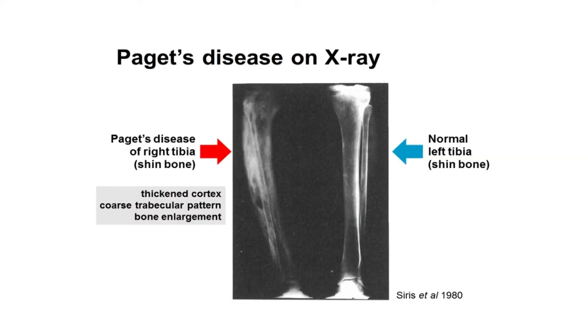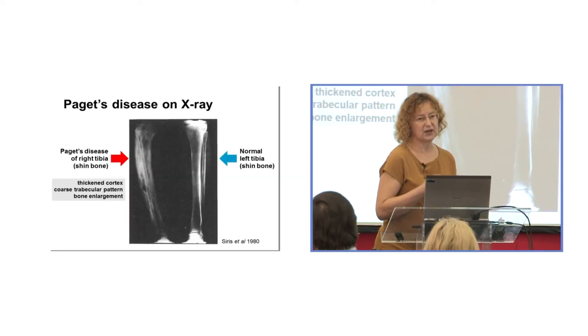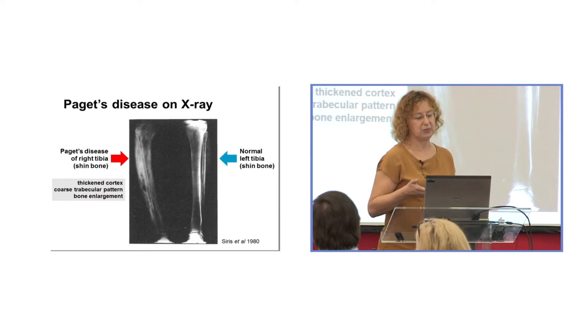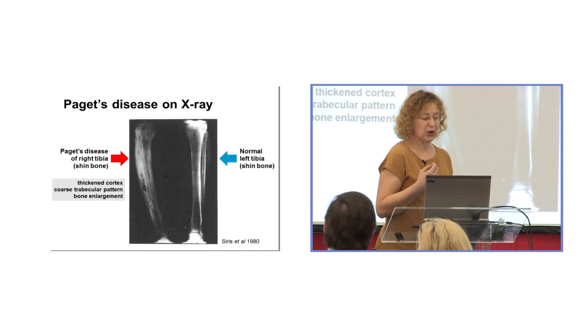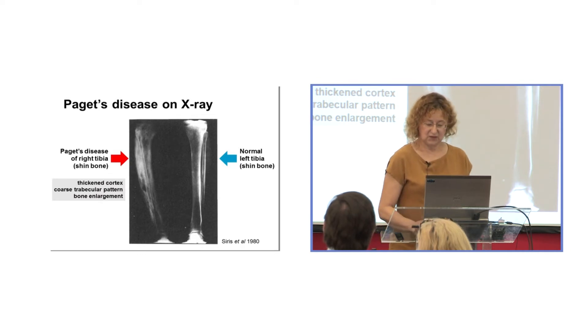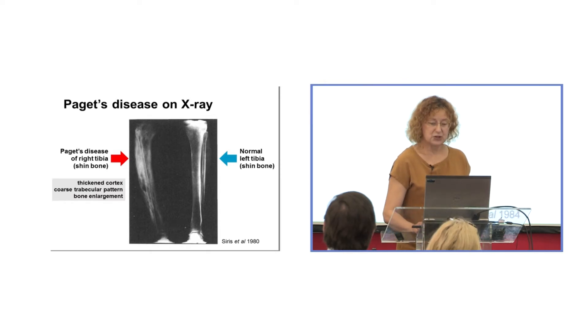This is an X-ray of a patient with Paget's disease in the right tibia — the affected bone on the left side of your screen. There are classic radiological signs of Paget's disease: bone expansion, cortical thickening, the outer shell of the bone thickens, and the trabeculae become expanded and mottled as well. Paget's disease is characterized by focally increased bone turnover which is due to abnormal osteoclasts.